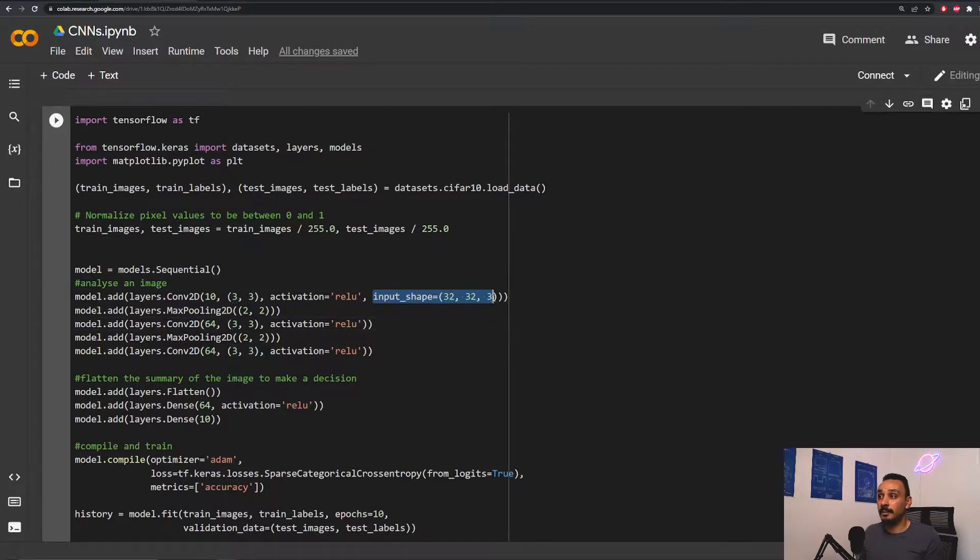Just like what we saw in the previous video, we need to set our input shape since we're working with images over here. It's good to set the width, the length, and how many channels you're working with. If you're working with a black and white picture, you will have to use one over here.